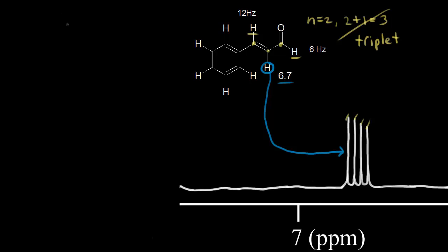We start with the signal for the blue proton. It's going to be split by the proton next to it — the proton in red — and the coupling constant between the red and the blue proton is 12 hertz. So the signal is split into a doublet, and this distance represents 12 hertz.